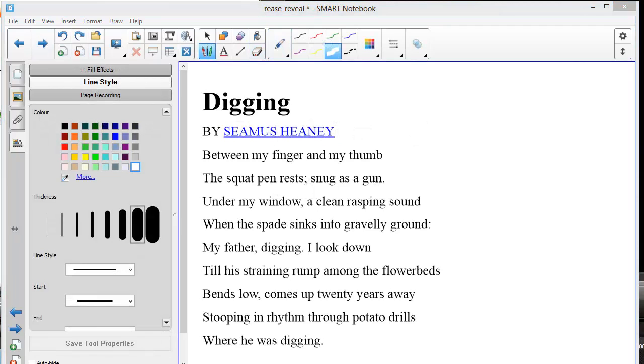If you were teaching texts, it's very easy to make instant cloze activities. Simply select your white pen and you can take out the words, and then have students discuss what they think the words might be. Once again, they can even come to the board and write in their suggestions, then use the eraser to reveal the correct ones.